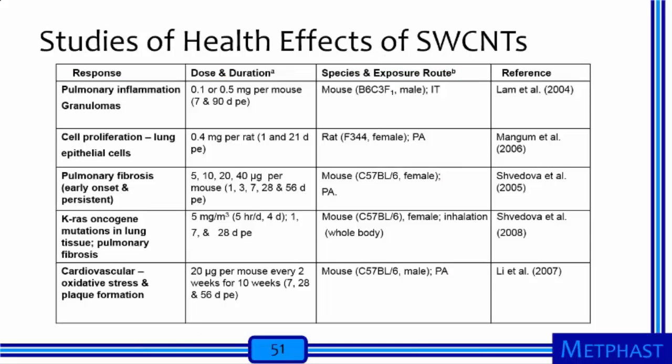In addition to causing effects similar to mesothelioma, carbon nanotubes have been shown in animal studies to cause pulmonary granulomas, pulmonary fibrosis, genetic mutation, carcinogenic potential, and cardiovascular effects. There remains a lack of human epidemiological studies on the health effects of nanoparticles. The emerging picture is complex, with many parameters — including size, shape, surface area, and surface chemistry — seeming to affect health risks.